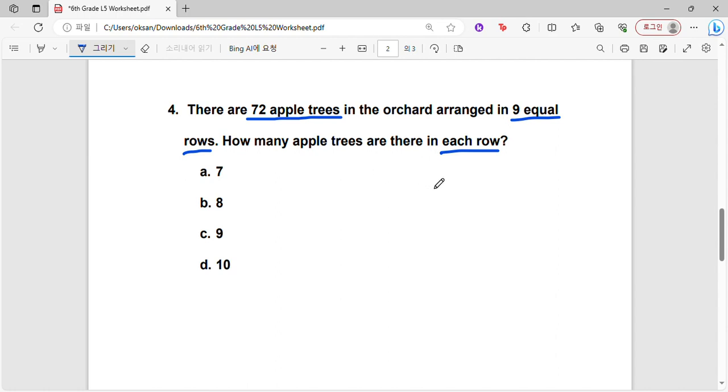This would just be 72 divided by 9, because we're dividing the 72 apple trees equally into nine rows. So that's why we do 72 divided by 9, which is 8. So B is our correct answer—there would be eight apple trees in each row.